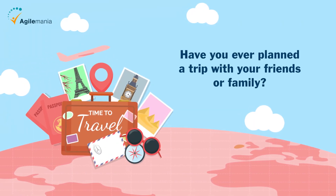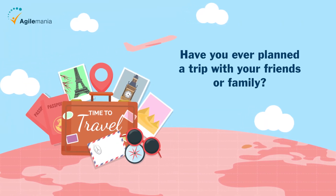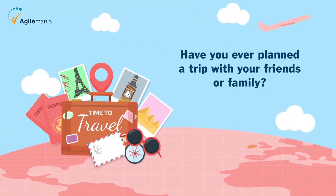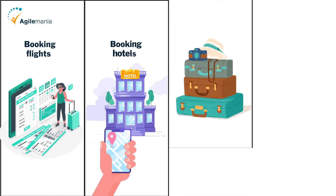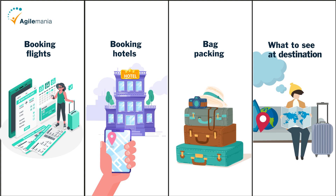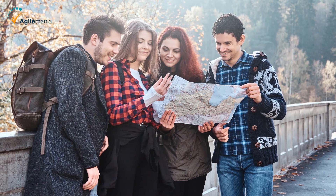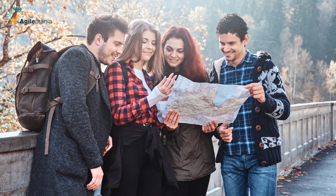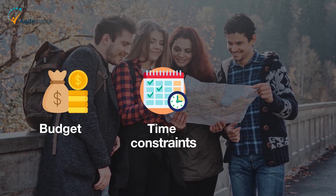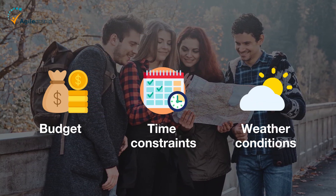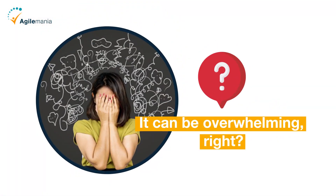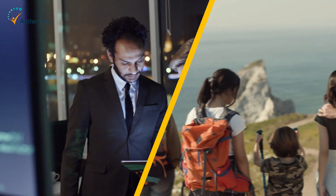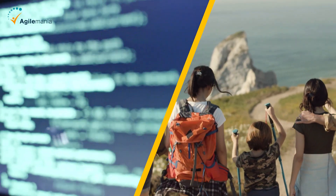Have you ever planned a trip with your friends or family? If you have, then you probably know how challenging it can be to organize everything — from booking flights and hotels, to packing your bags, to deciding what to do and see at your destination. You have to consider the needs and preferences of everyone involved, the budget and time constraints, the weather and local conditions, and so on. It can be overwhelming, right? Well, planning a software project is not that different from planning a trip.